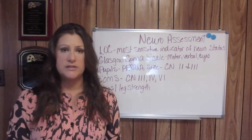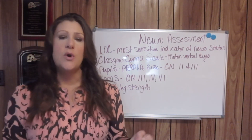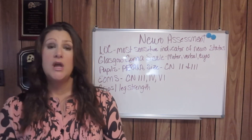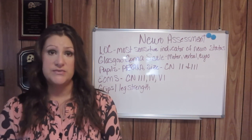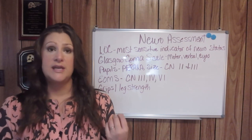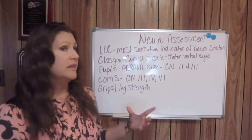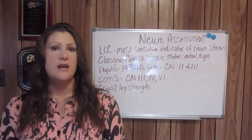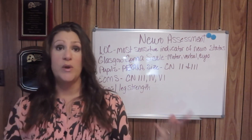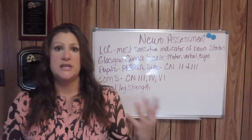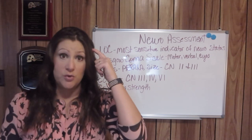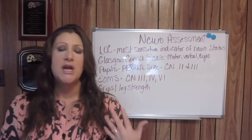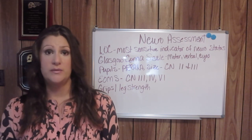When you have your patient squeeze your hands, you assign them a number based on their strength, but what you are really looking for is equality — not raw strength. The same applies to leg strength. When your patient pushes against your hands, you are assessing for equality of strength. If one leg or one arm is much stronger than the other, that could indicate a neurological problem such as a stroke. If both sides are equally weak, that is a muscular problem, not a neurological one.